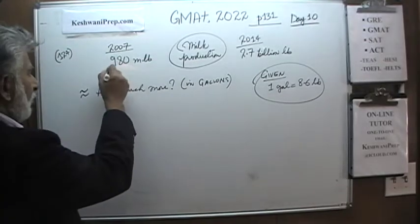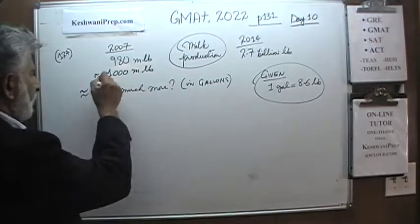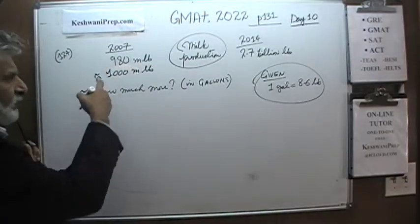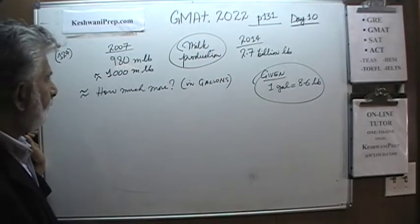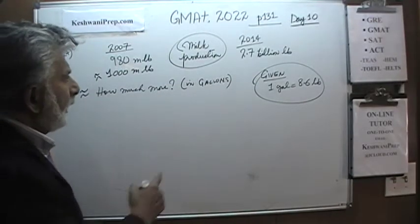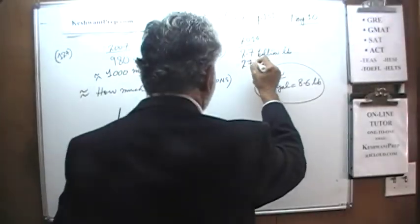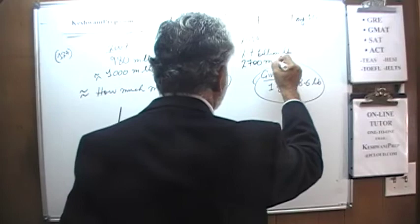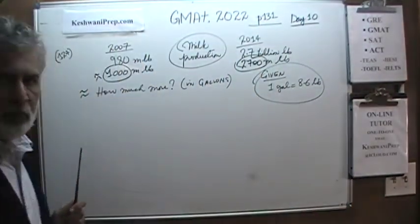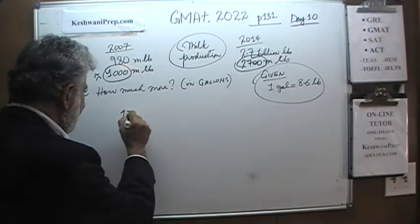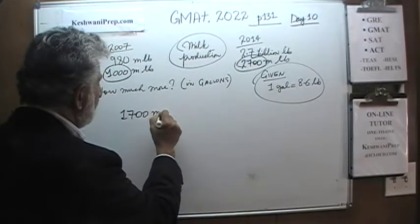980 million pounds — we are going to pretend that it is approximately 1,000 million pounds. And here we have 2.7 billion, which is the same as 2,700 million. So we are simply going from 1,000 to 2,700, which is an increase of 1,700 million pounds.